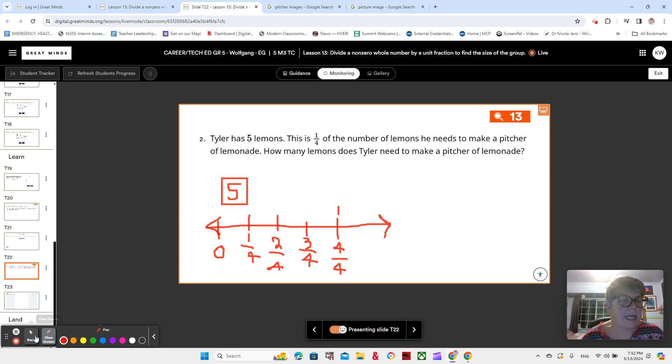Okay. So let's add to our tape diagram. See if I can do that very skillfully. Not really, but there we go. Okay. And we're going to make that into parts as well. So five is one fourth and there's two fourths, three fourths and four fourths.